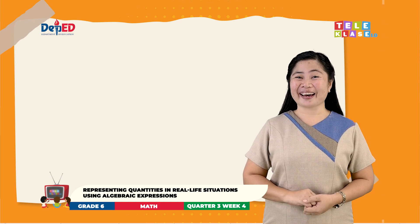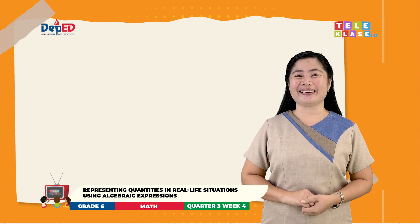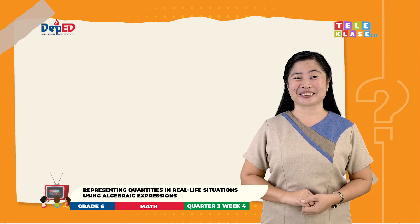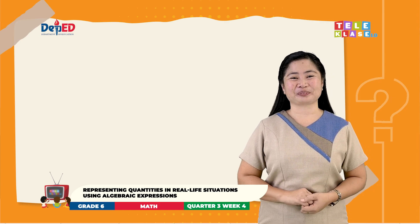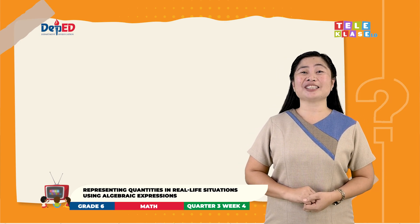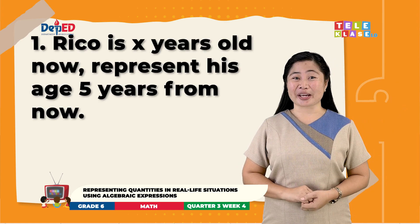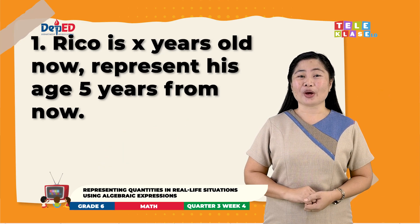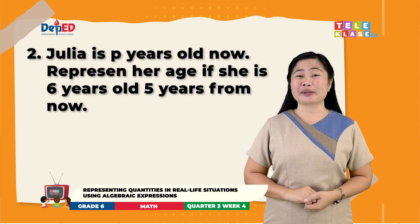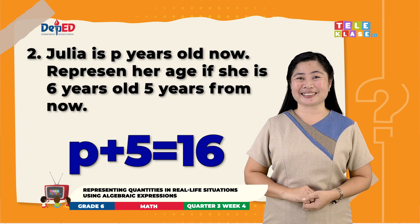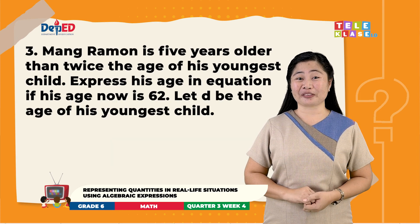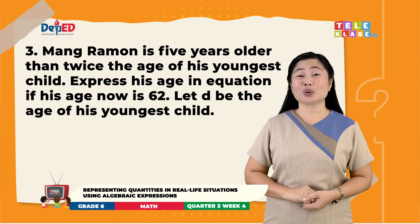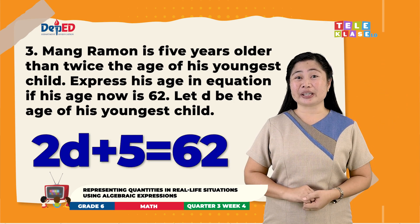Okay, we're back. Let us now check your work and let's see if you got the correct answer. For number one, the answer is X plus 5. Number two, the answer is P plus 5 equals 16. And number three, the answer is 2D plus 5 equals 62.